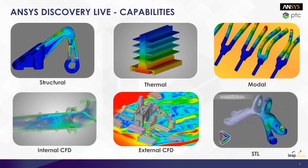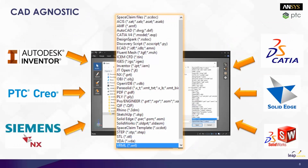In terms of capabilities, ANSYS Discovery Live can run FEA simulations — structural analysis, thermal analysis, and modal analyses. But you can also do transient CFD simulations, whether it's internal flow or external flow. It can work with all sorts of geometry formats, including STL files, which opens up even greater opportunities for people to run quick simulations. It's CAD agnostic, so it doesn't matter where the CAD has come from — you can bring it into Discovery Live, make changes to it, get results, and go through different concepts very quickly.